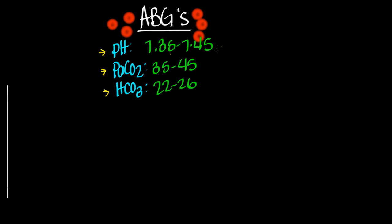Now our pH is going to tell us if we are in acidosis or alkalosis in relation to one of these things being off. If we have a pH that's under 7.35, that means we're looking at acid — it's becoming more acidic. If we have it over 7.45, then we know we are just the opposite — we're becoming more alkaline, or alkalosis.